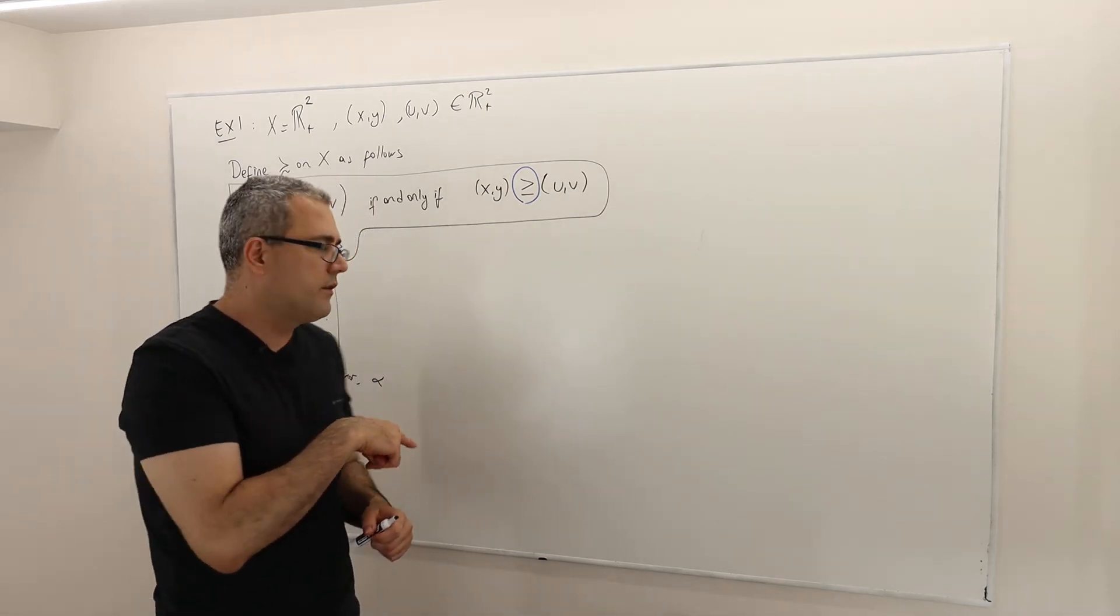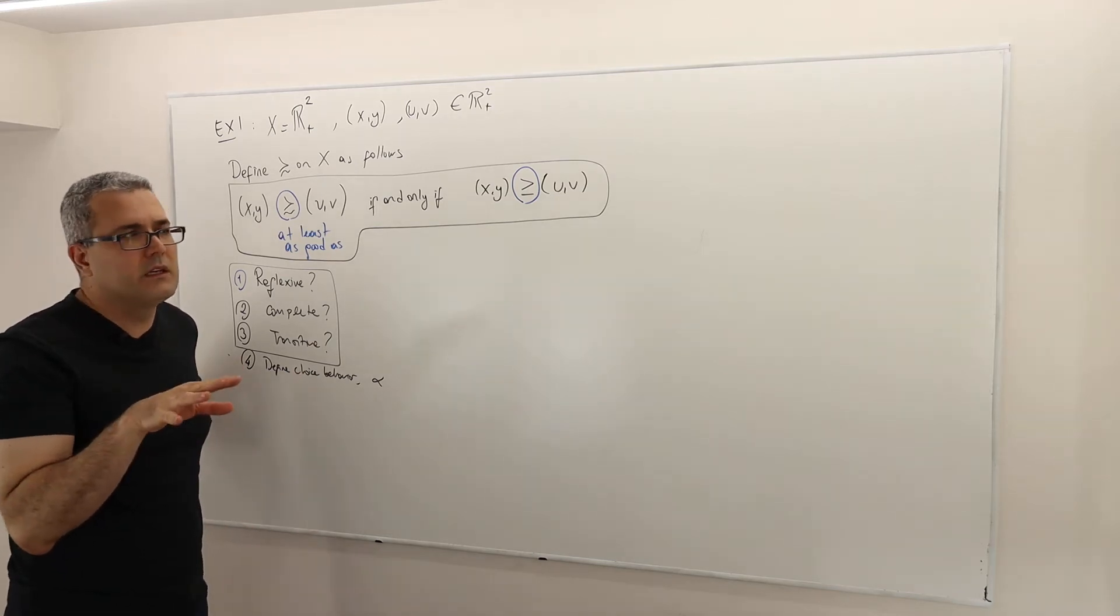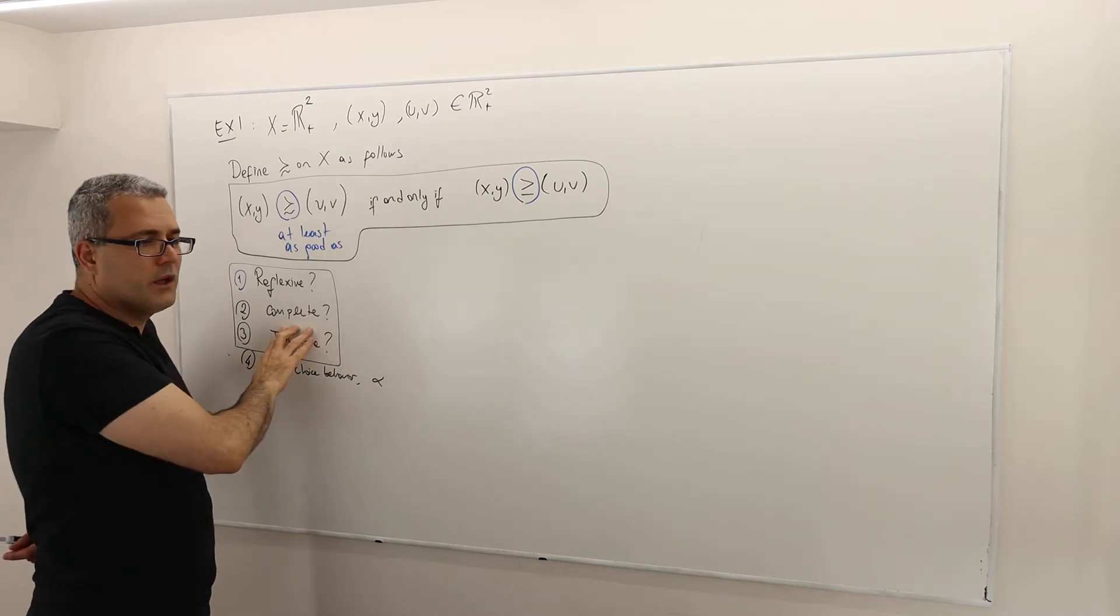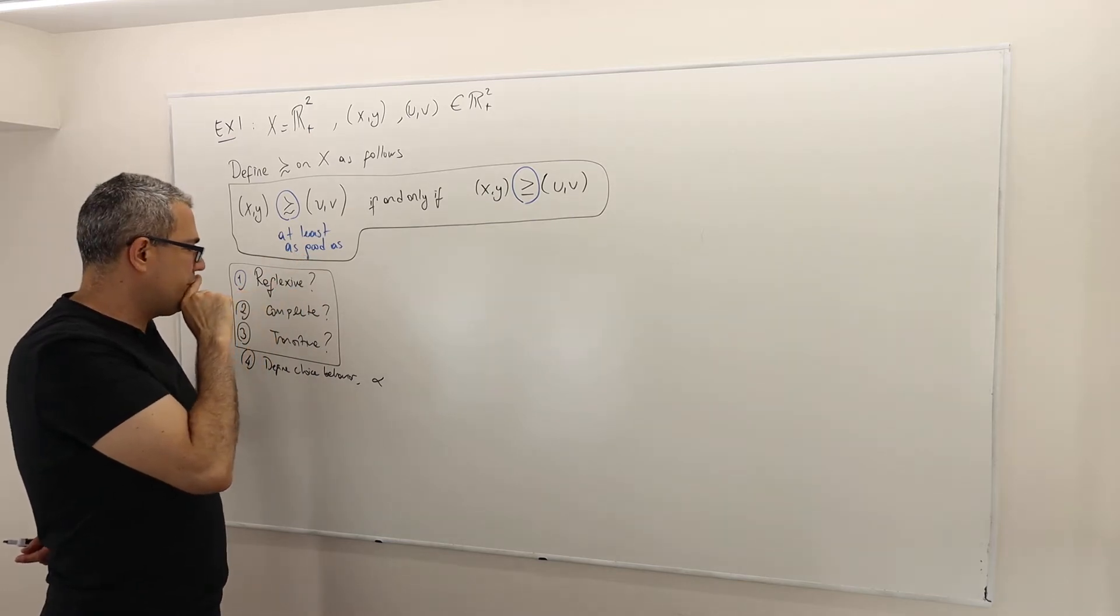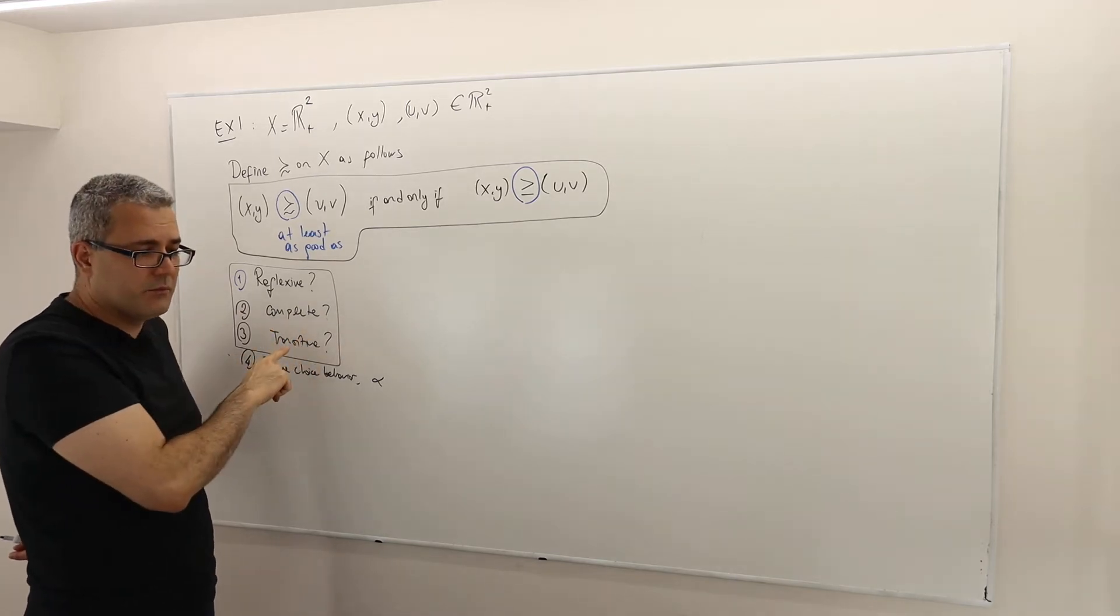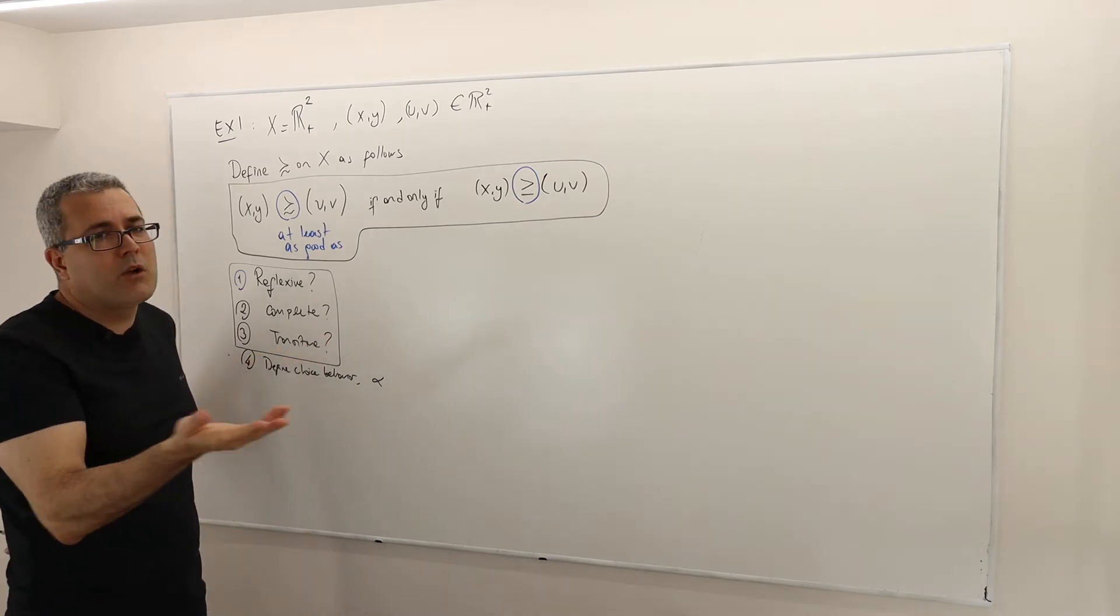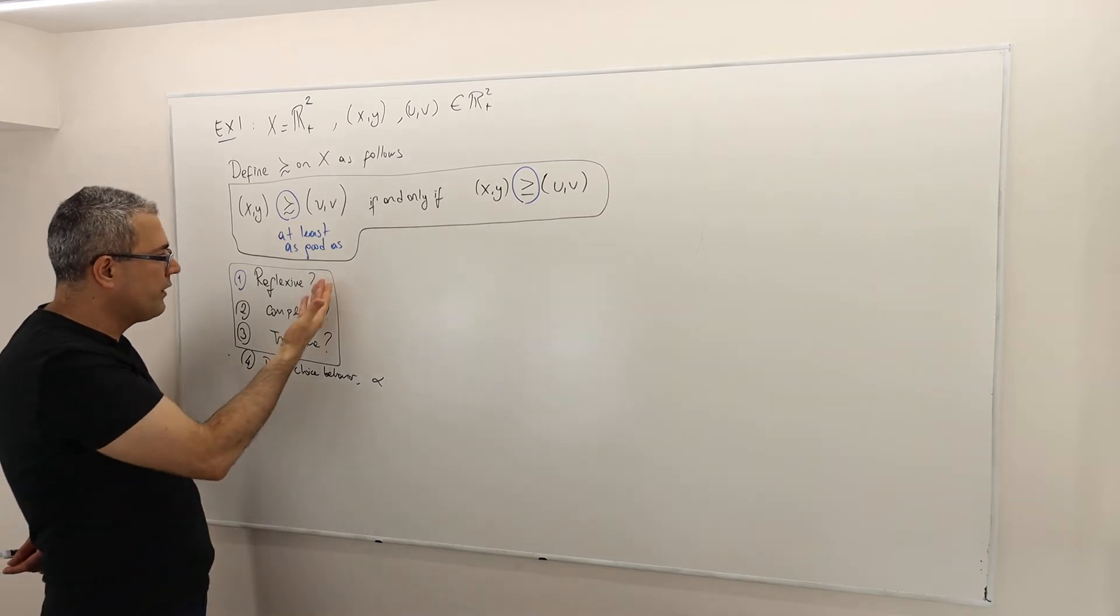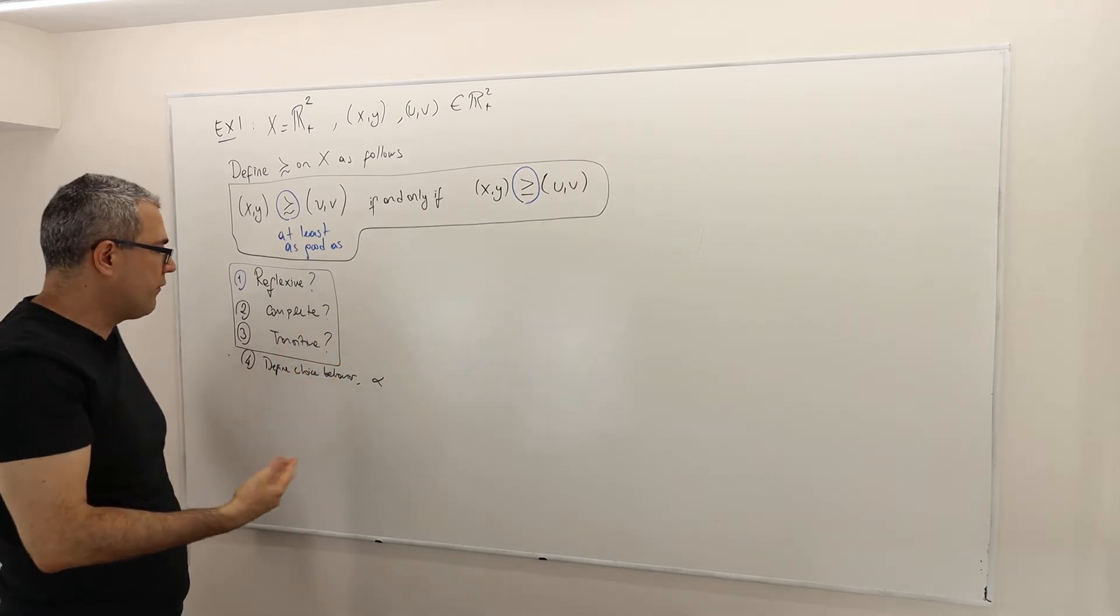So now let's talk about the third property, the transitivity. We can simply conclude that this binary relation is not a preference relation because it fails to be complete. Remember the definition of a preference relation: it has to be reflexive, complete, and transitive. Clearly it's not complete, so it's not a preference relation. But my question wasn't asking me to prove if it is a preference relation or not. It was asking me to prove if it satisfies those properties. If not, provide a counterexample.